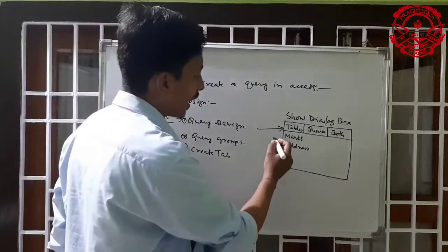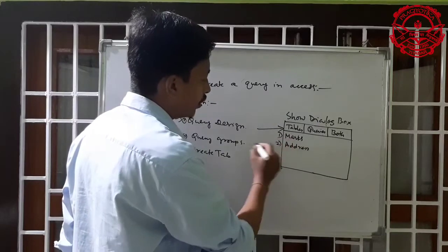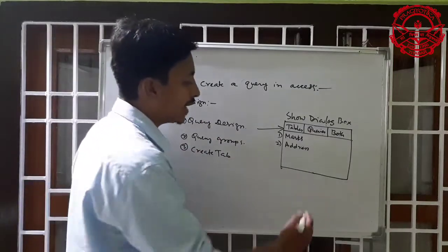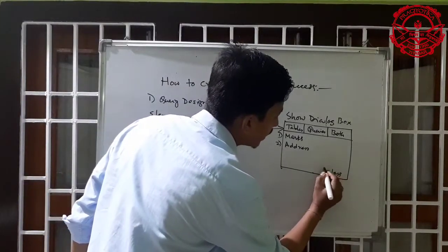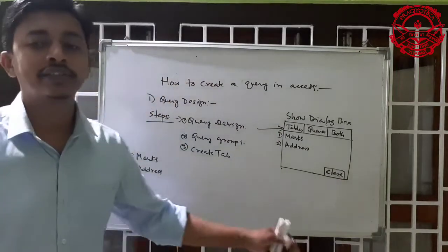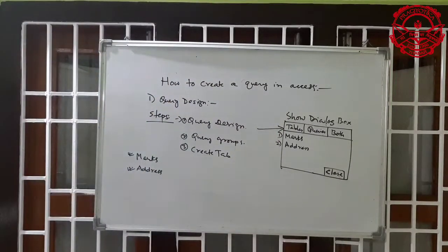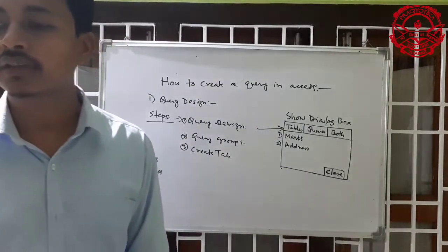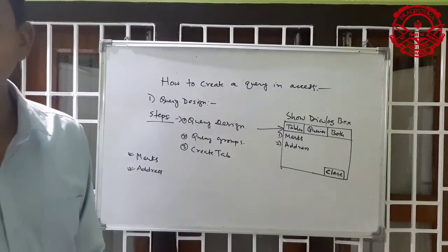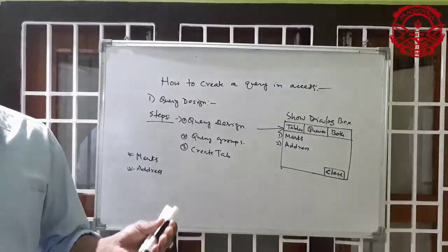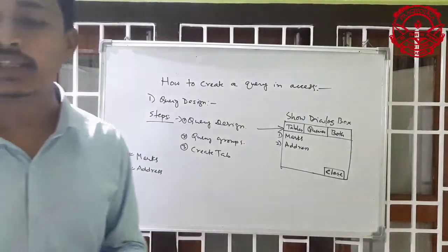After clicking the close button, the query window appears. In the query design window you can select the fields to be included in the query. In query design there are options: field, table, sort, show, criteria, and or. After selecting the tables, another window comes — that is the query design grid.